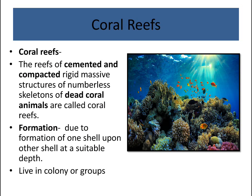Coral reefs are formed because calcium carbonate is the main component, secreted by the corals. This calcium carbonate becomes compacted and cemented into rigid, massive structures from the numberless skeletons of dead coral animals — these are called coral reefs. They form through the accumulation of one shell upon another at a suitable depth.